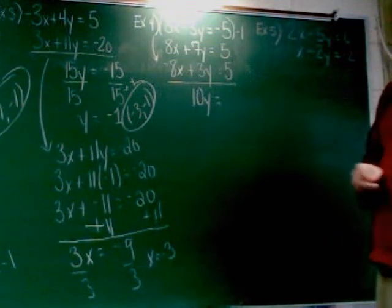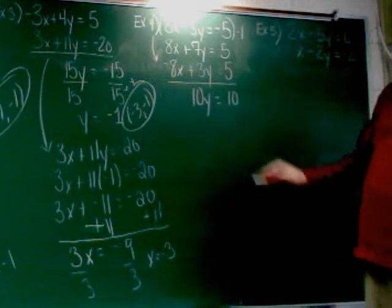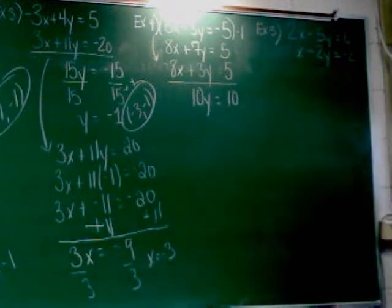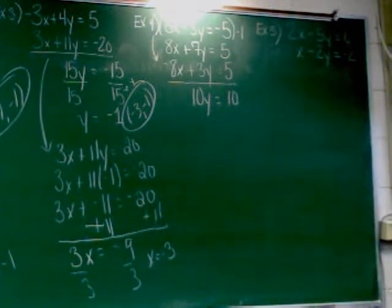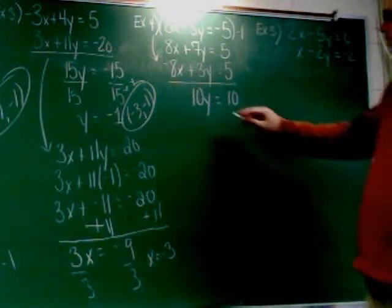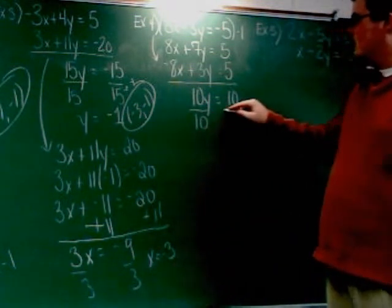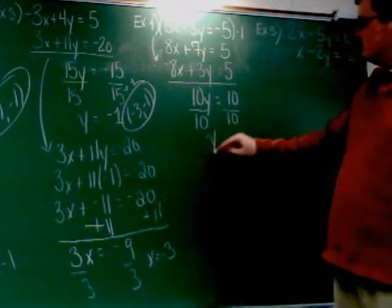And 5 and 5, that's going to give me 10. Kind of hard to screw this one up. I'm going to divide across by what? 10. And I'll quickly find out that y equals 1.